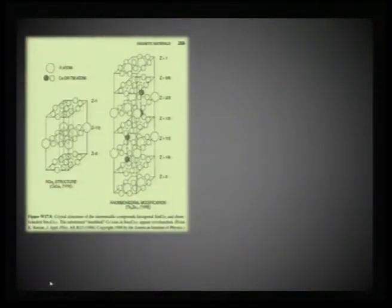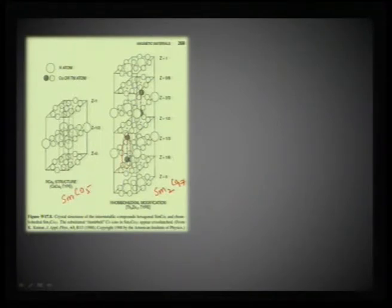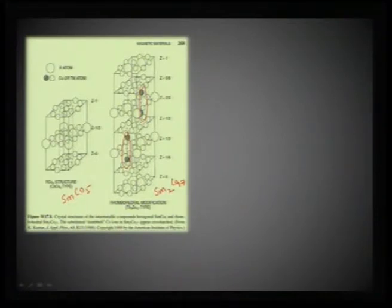Samarium cobalt is a very popular but structurally complex alloy crystallizing in hexagonal symmetry. SmCo₅ is the base material for SmCo₁₇, where some samarium atoms are replaced by dumbbell-shaped copper-cobalt dimers. This is a very intricate alloy that must be carefully engineered.